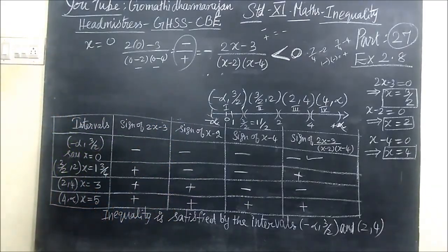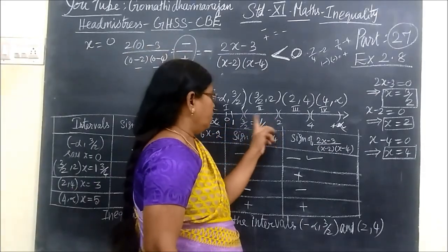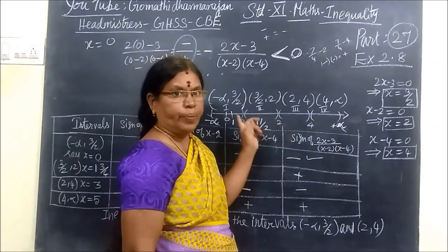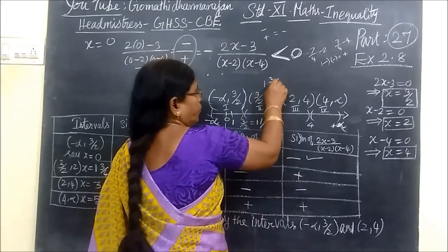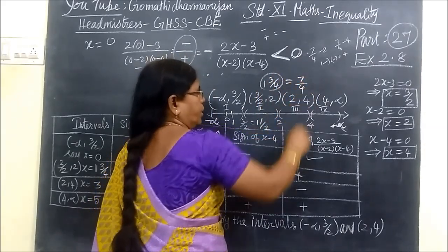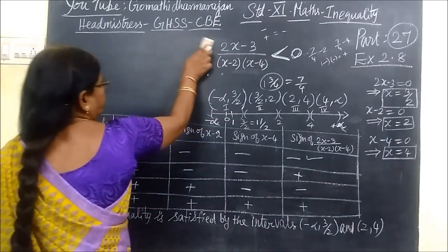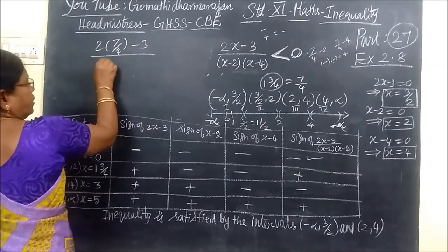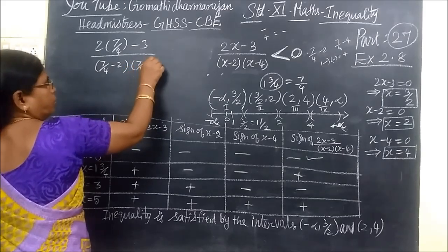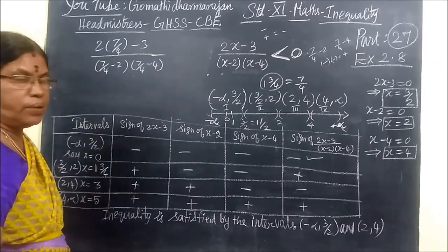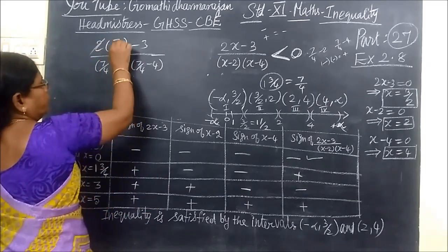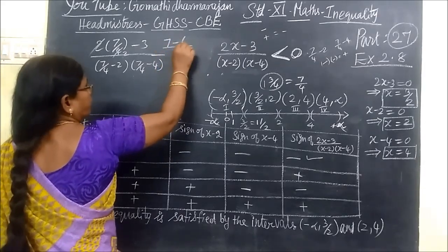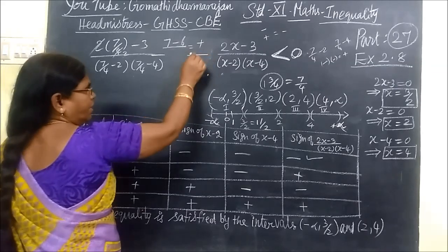In the same way, come to the next interval, 3 by 2 to 2. That means 1 and a half to 2. You can take 1.75, which is 7 by 4. You are substituting 2 brackets 7 by 4 minus 3, then 7 by 4 minus 2, then 7 by 4 minus 4. The sign is very important. Here, 7 minus 8, then here also minus.